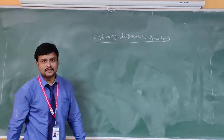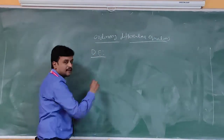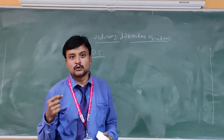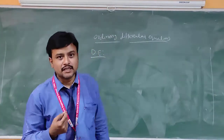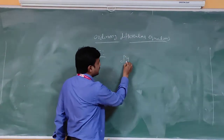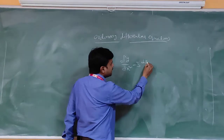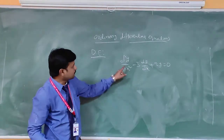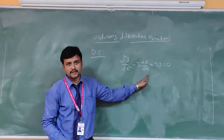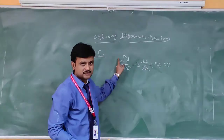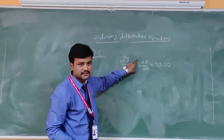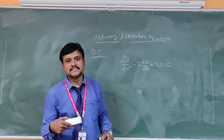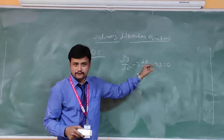So what is a differential equation? An equation involving the derivatives of one dependent variable with respect to one or more independent variables is called a differential equation. For example, d²y/dx² minus 3 dy/dx plus 2y is equal to 0. Here y is a dependent variable and x is an independent variable.